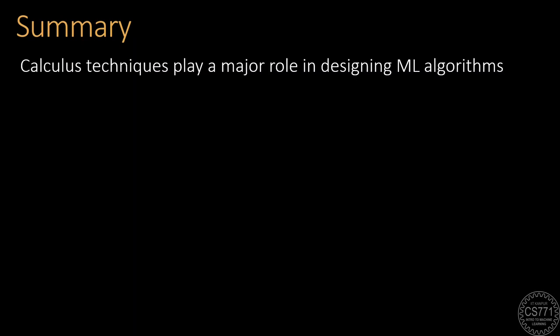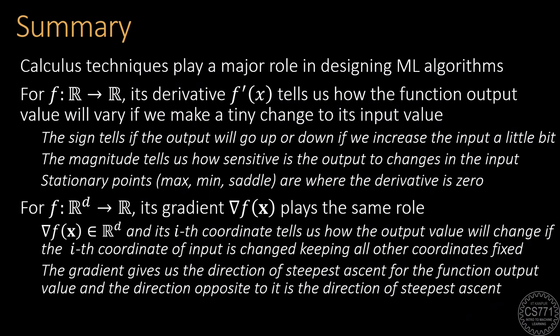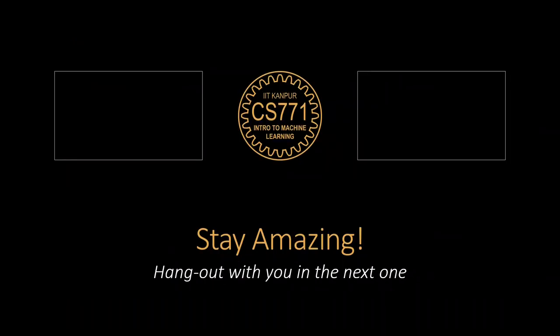In summary, today we revisited calculus techniques that play a major role in designing machine learning algorithms. We first looked at functions on the real line and saw how their derivatives tell us how the function output value changes if we make tiny changes to the input value. Then we moved on to multivariate functions and saw how the gradient plays the same role there. So that's all for today folks, stay amazing and I will look forward to hanging out with you in the next one.